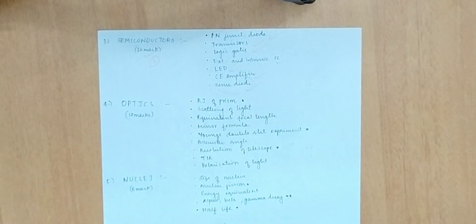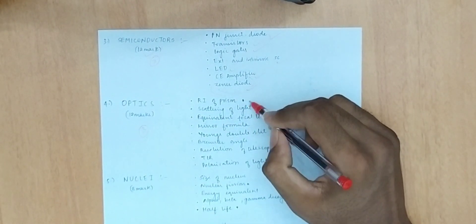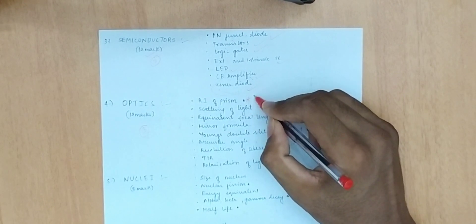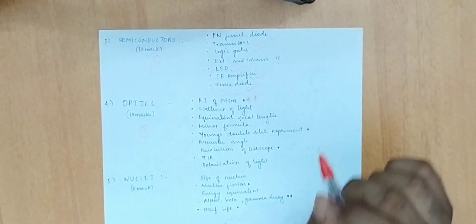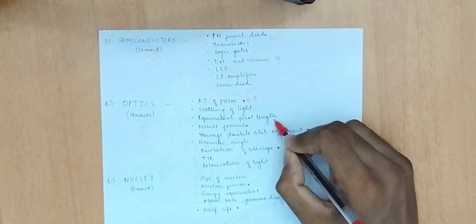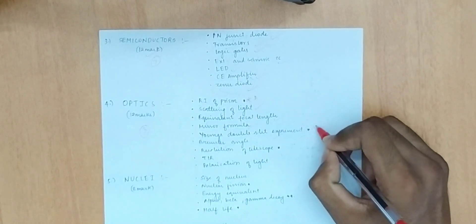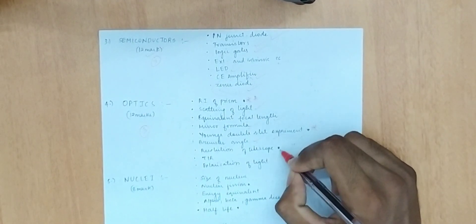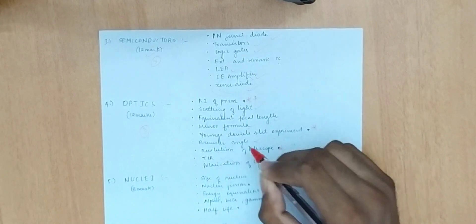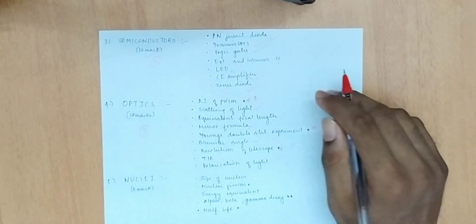Important optics topics include Brewster's angle, resolution of telescope, total internal reflection, and polarization of light.